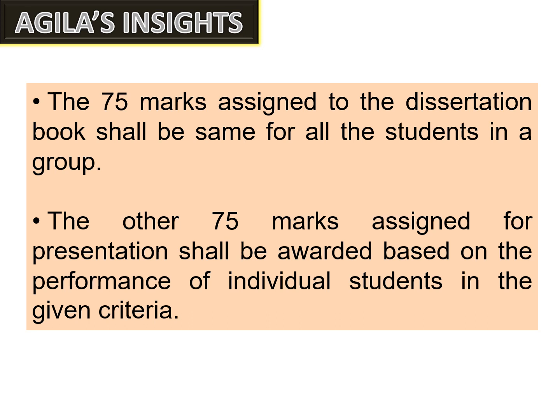The total marks are 75 plus 75, equaling 150. Regarding allotment: the 75 marks for the dissertation book will be the same for all students in a group — if the book is awarded 60 marks, all group members receive 60 marks. However, presentation marks differ per student, since each individual's presentation varies, so marks will not be the same across the group.